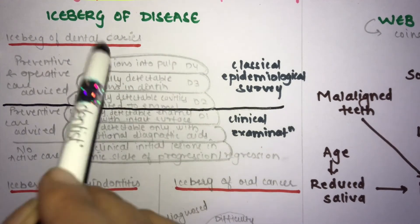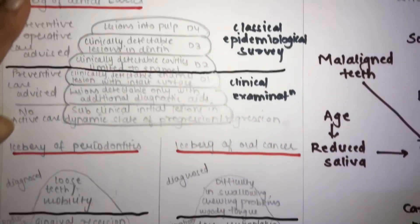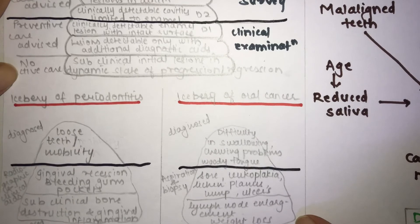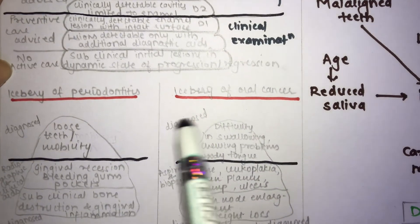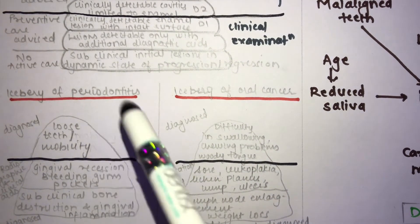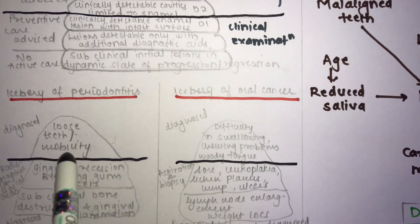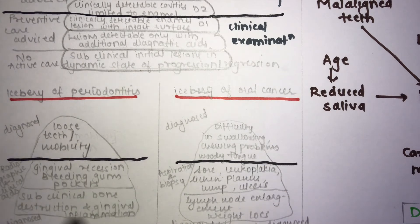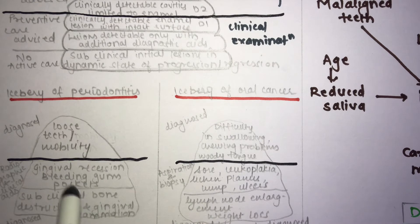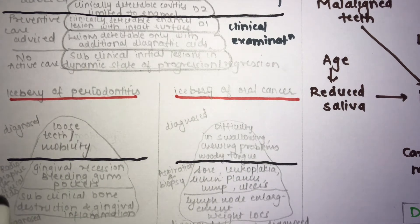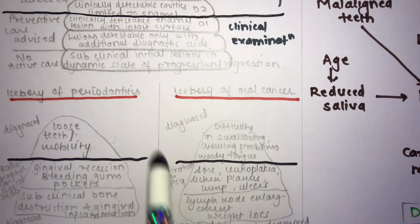For the iceberg of periodontitis: the easily diagnosed visible portion includes cases where the patient presents with tooth mobility. The submerged portion includes gingival recession, bleeding gums, and pockets — diagnosed only after radiographic and clinical aids — and subclinical bone destruction and gingival inflammation, which remains mostly undiagnosed.